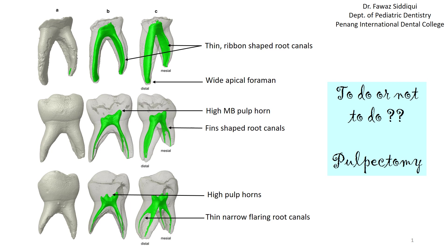First, you must know that in primary molars the root canals are very thin and ribbon-shaped. Ribbon-shaped means if you look from the sides it is very broad, but from the buccal side it will appear as very narrow. This makes pulp extirpation very difficult in primary molars.